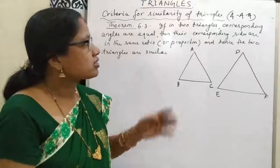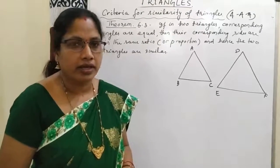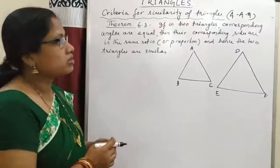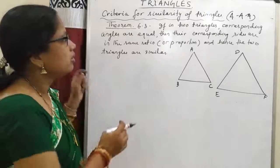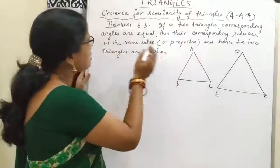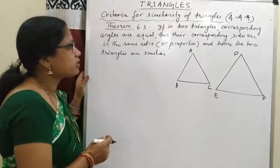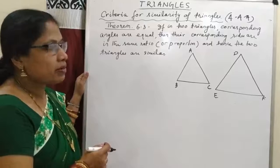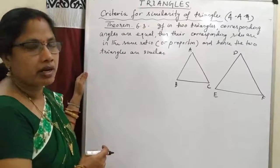The first criteria is the Angle-Angle-Angle similarity condition. Here is a theorem based on this AAA similarity condition: if in two triangles, corresponding angles are equal, then their corresponding sides are in the same ratio or in the same proportion, and hence the two triangles are similar.